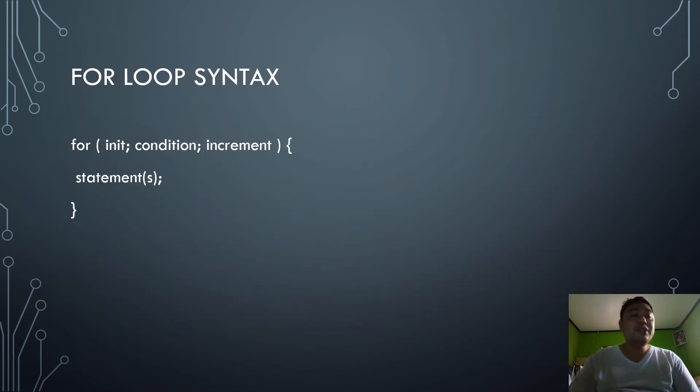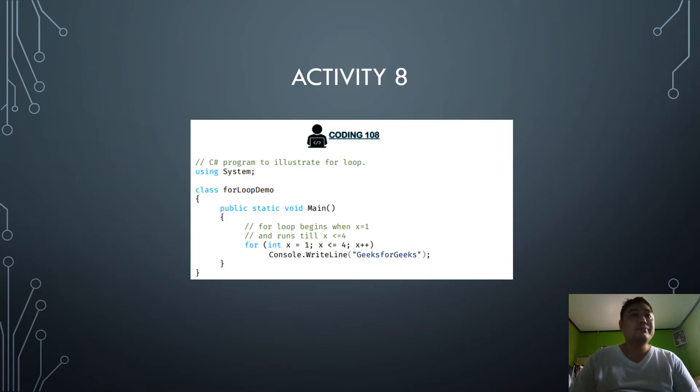This is evident in our syntax. As you can see, you have the for, the initialization condition, and the increment, and then the statements. After that, it is ended with a condition. In our activity number eight, there will be an illustration for a for loop demo. You are given the chance to solve for activity number eight and upload it to our Google Classroom.